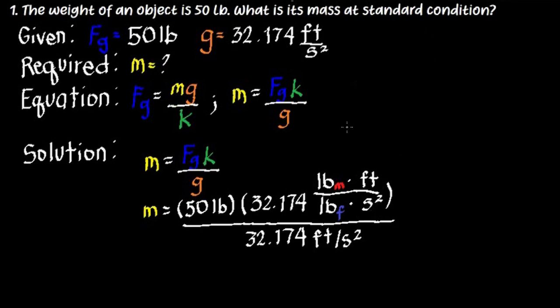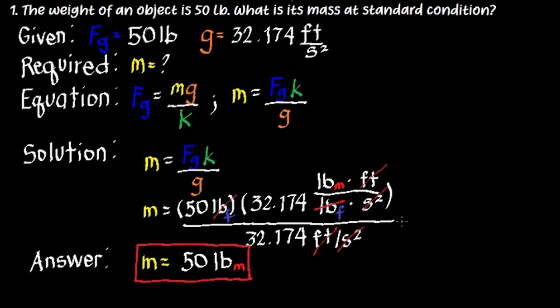Now we can cancel the same units. We have feet, seconds squared, and it's important to identify pound force versus pound mass so we know what to cancel. We cancel pound force and are left with pound mass, which is what we need. We can also cancel 32.174. So the mass at standard condition equals 50 pound mass. That's our answer for number one.